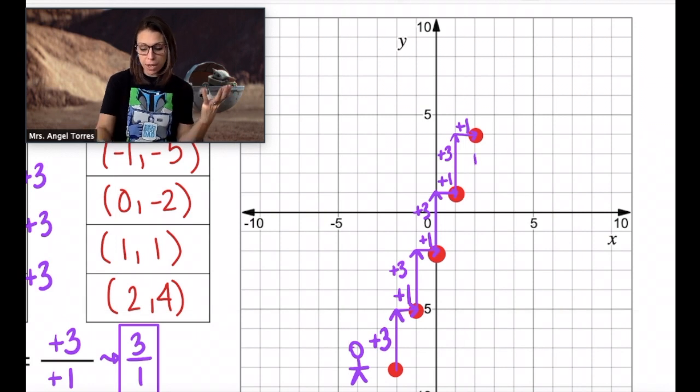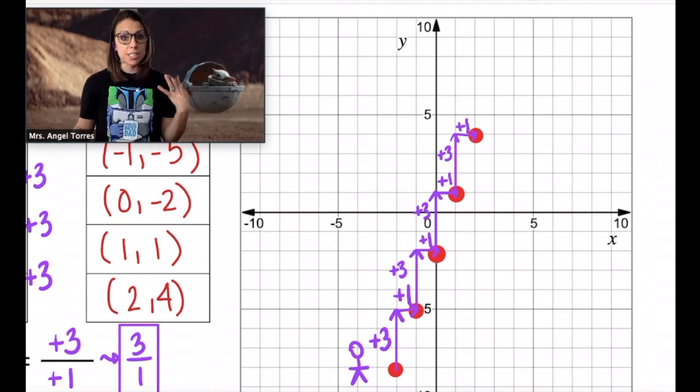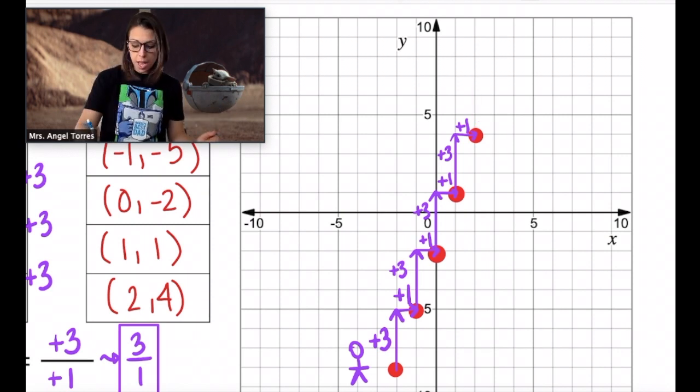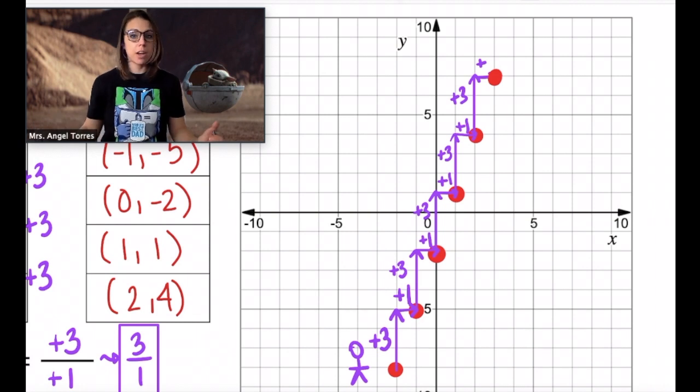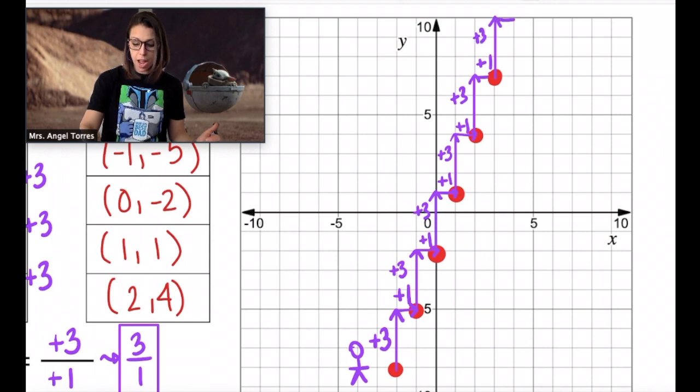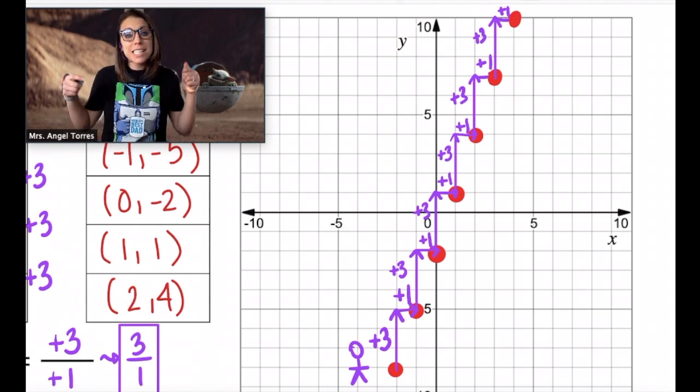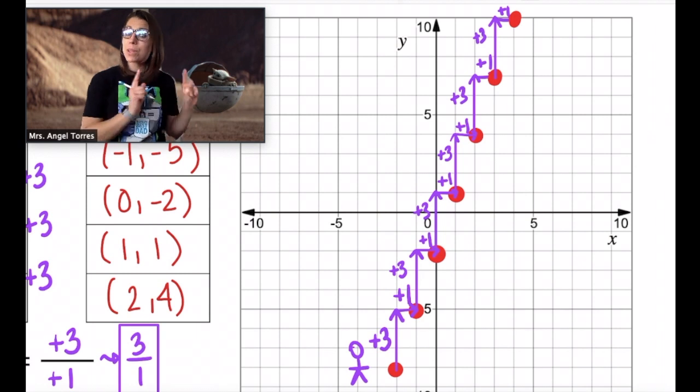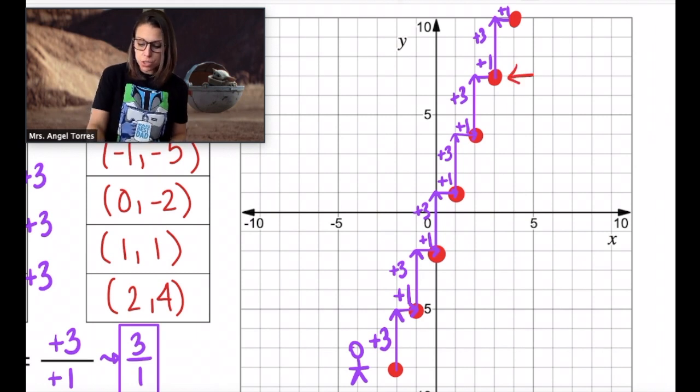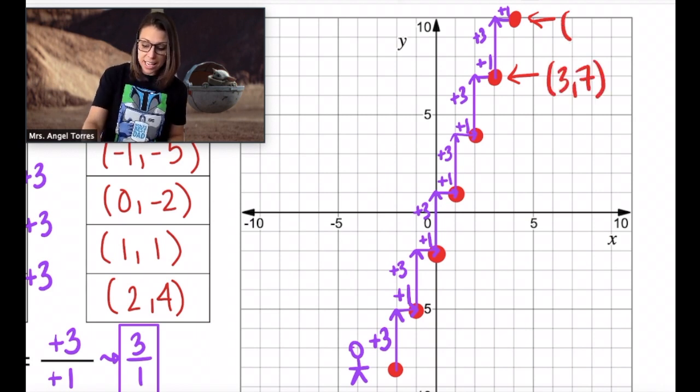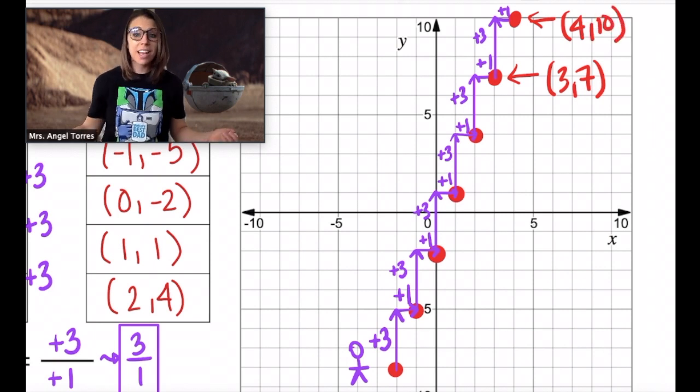Let me show you what I mean. So using this pattern, notice how my graph stopped here. Well, I'm going to keep going to find more solution points. So I'm going up 1, 2, 3 units and right 1. And I just found another solution point on the graph. Now I'm going to go up 1, 2, 3 units again and right 1. And I found another solution point on the graph. So the table gave me 5 solutions, but using the rate of change, I was able to find 2 more. I was able to find the solution point (3, 7) and (4, 10). How cool is that?